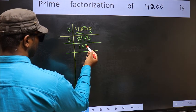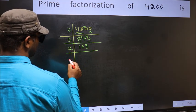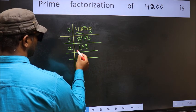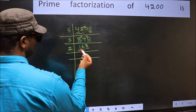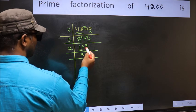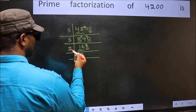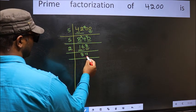Last digit 8, it's an even number so take 2. First number 1 is smaller than 2, so take 2 numbers: 16. When do we get 16 in the 2 table? 2 eights = 16. The other number is 8. When do we get 8 in the 2 table? 2 fours = 8.